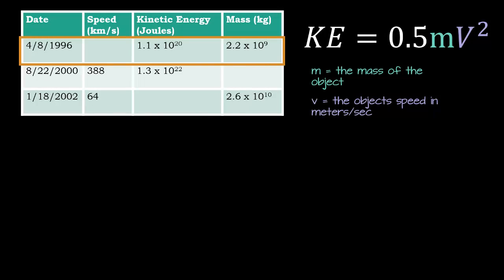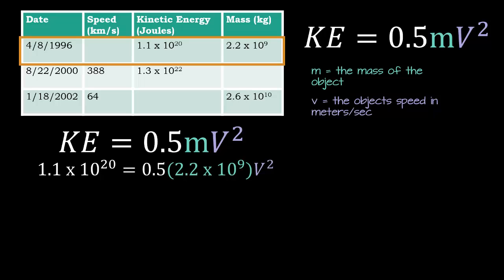So let's figure out the blank one here. In this one, we're looking for speed or kilometers per second. I always like to start out with the formula and then start filling in. We know that the kinetic energy is 1.1 times 10 to the 20th, and I'm getting that right here. Times 0.5, which is part of the formula. Times 2.2 times 10 to the 9th. Now m is your mass, so that's what I'm getting right here. Times v squared, and v squared is what we're looking for.